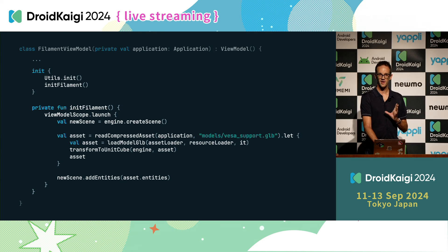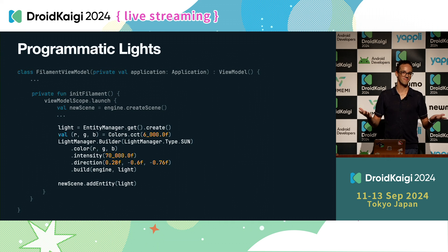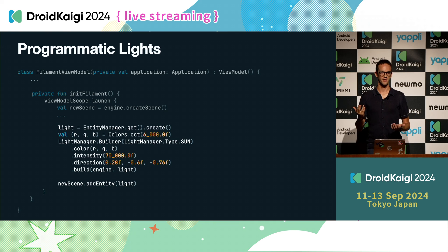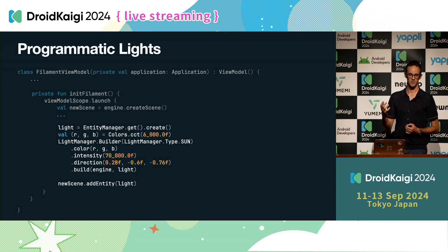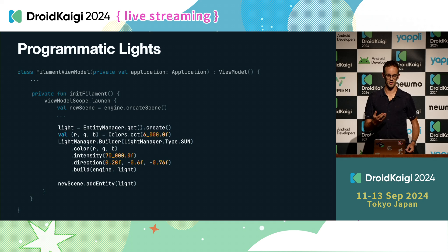If we do this, we would already have a model, but it would be totally black when displayed — because without any light, you wouldn't see anything, just like in the real world. So the first thing we need to do is create our virtual sun. To do so, we use a LightManager that, with its builder, allows us to create as many lights as we want. In this case, we create one with a type of sun — one of the built-in types in Filament — with a given color, intensity, and direction, and then we add it to our scene.